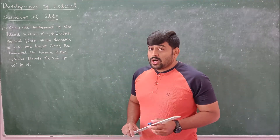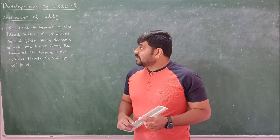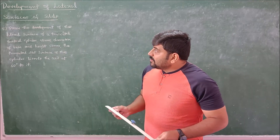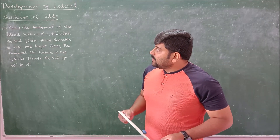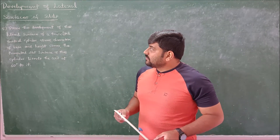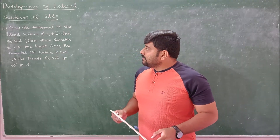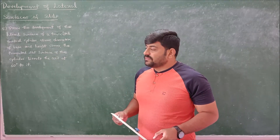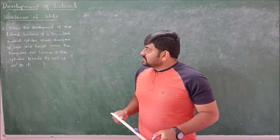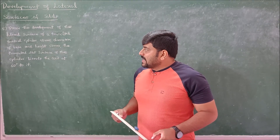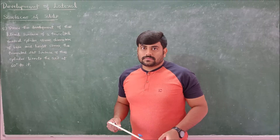Moving to the last problem on parallel line method of development. Problem 5 states: draw the development of the lateral surface of a truncated vertical cylinder of 40 millimeters diameter base and height 50 mm. The truncated flat surface of the cylinder bisects the axis at 60 degrees to it.